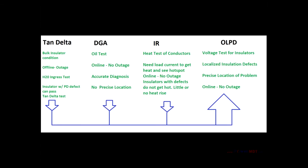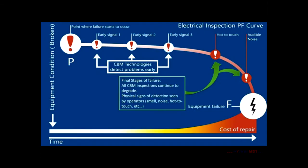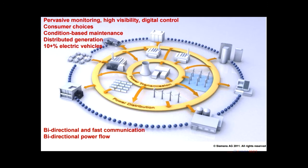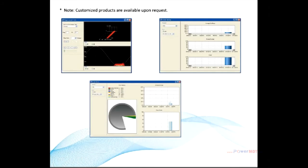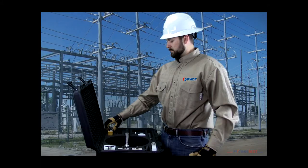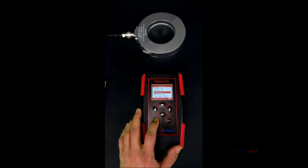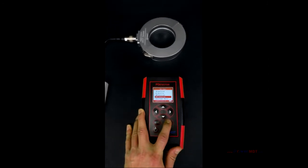The information from online PD testing is becoming increasingly vital to asset managers in the transmission and distribution industry, which faces many challenges including more stringent reliability requirements and the tightening of maintenance budgets. PMDT provides the diagnostic solutions, field testing services, and the education and training necessary to meet these challenges.